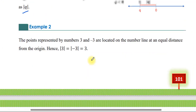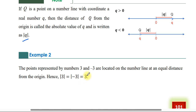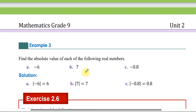Example 2: the point represented by the number 3 and negative 3 are located on the number line at equal distance from the origin. That means the absolute value of 3 is equal to the absolute value of negative 3, which is equal to 3. Example 3: find the absolute value of the following numbers. Absolute value of 660 is 660. Absolute value of 7 is 7. Absolute value of 0.8 is 0.8.